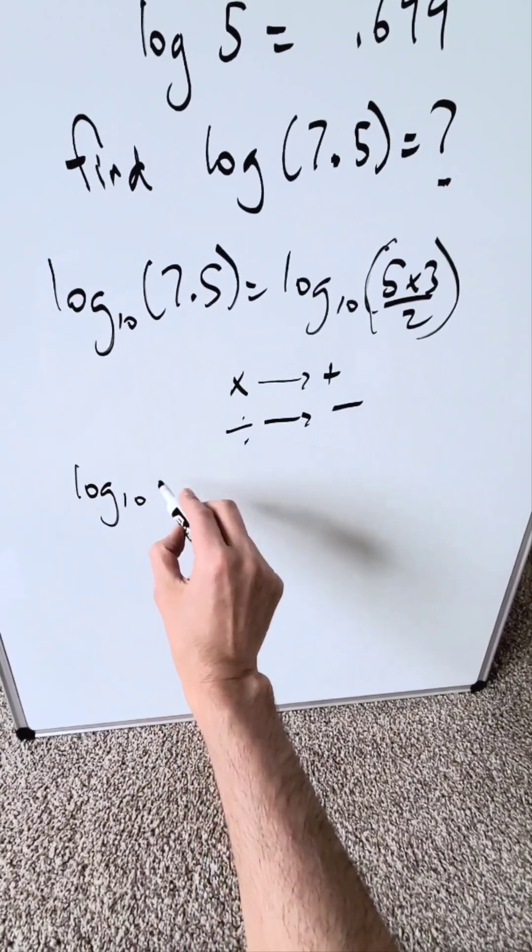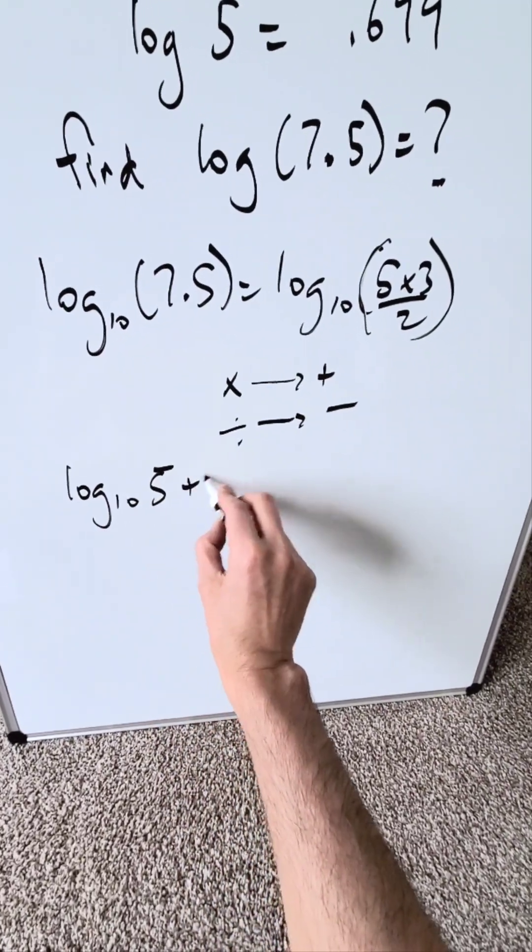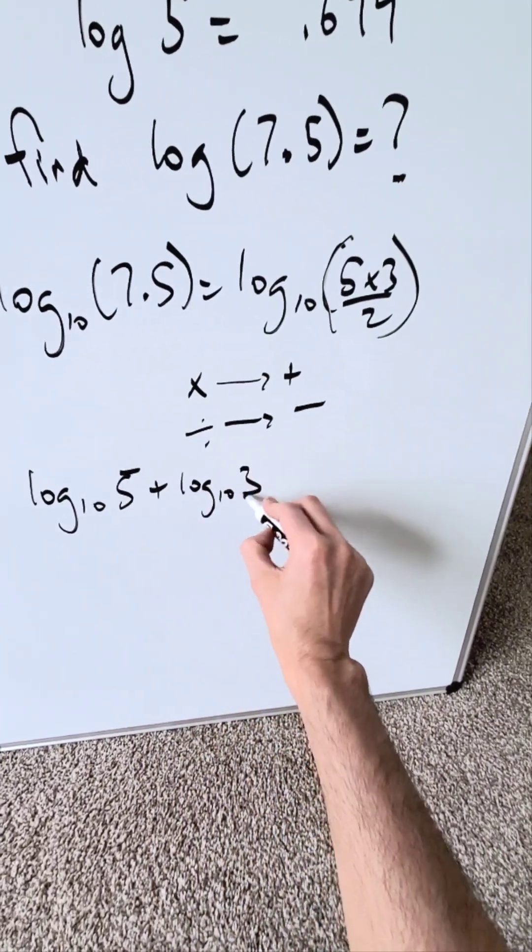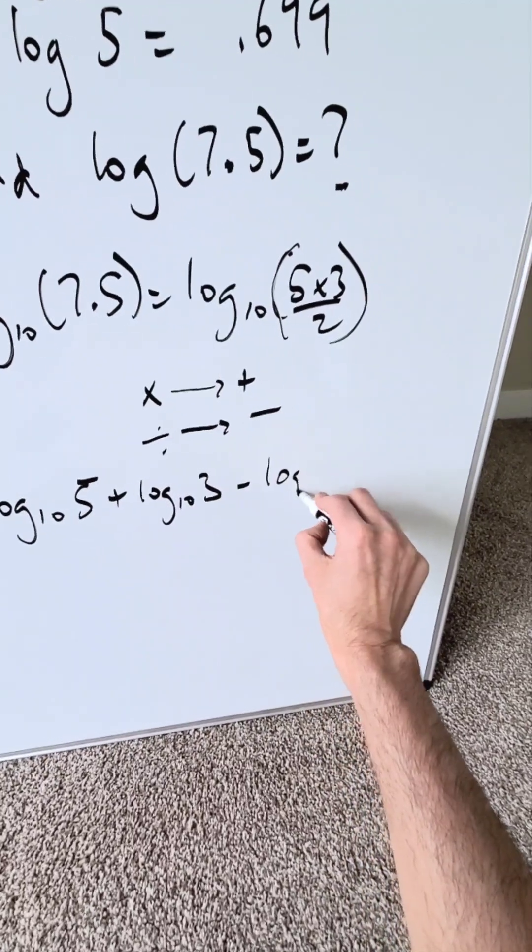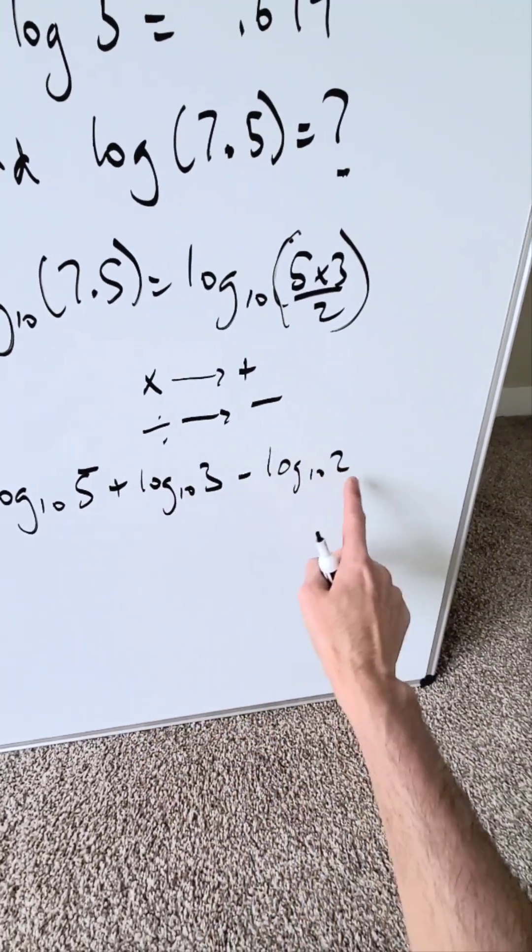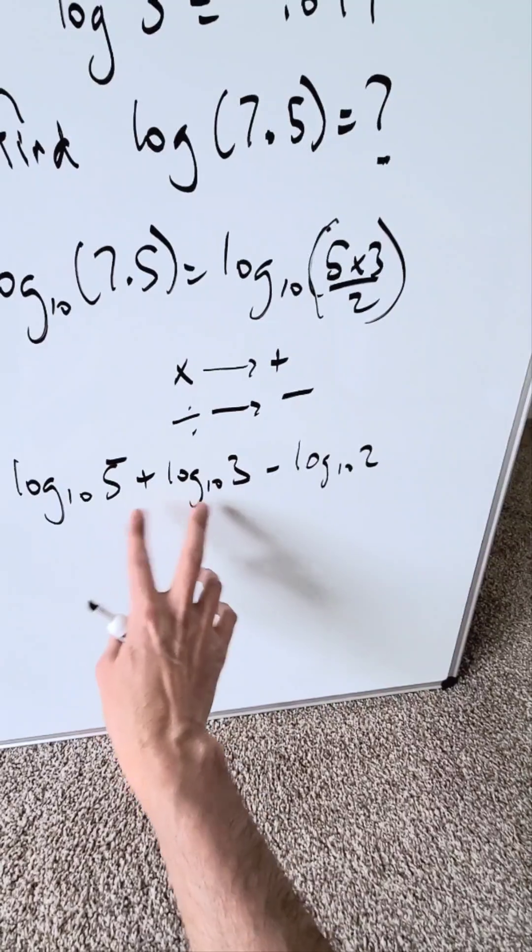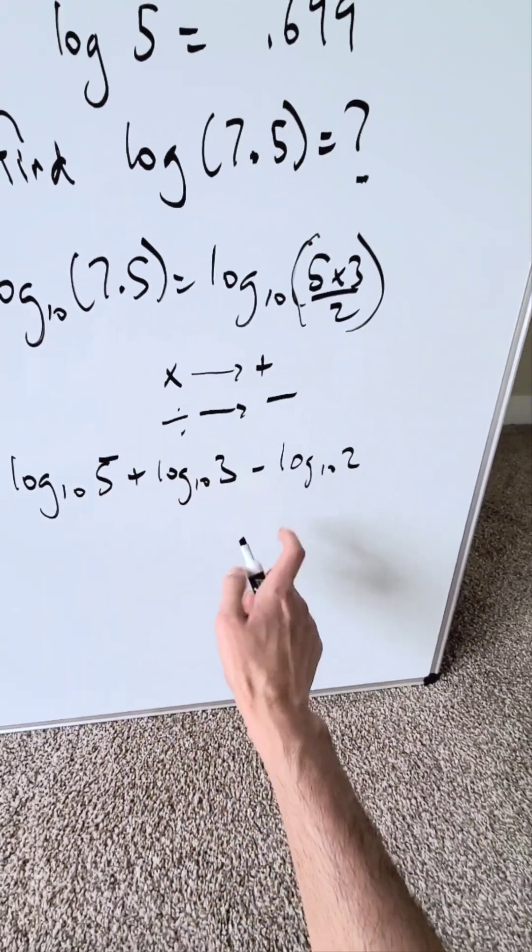What you're doing is log base 10 of 5, then log base 10 of 3, then minus log base 10 of 2. You'll have 5 times 3 divided by 2. In their individual logs, this is how it shows up as a sum and a difference.